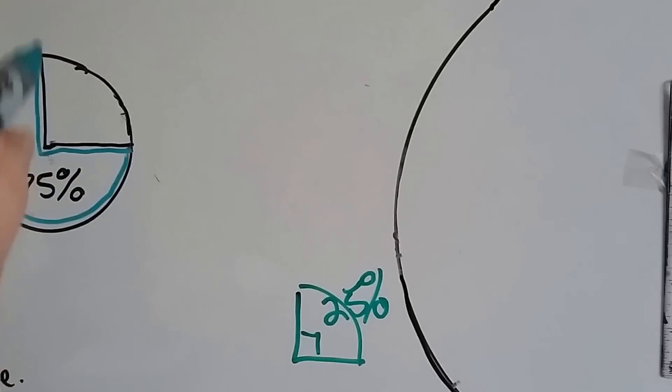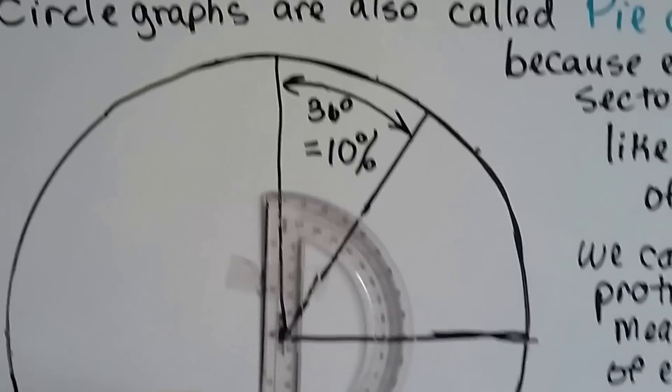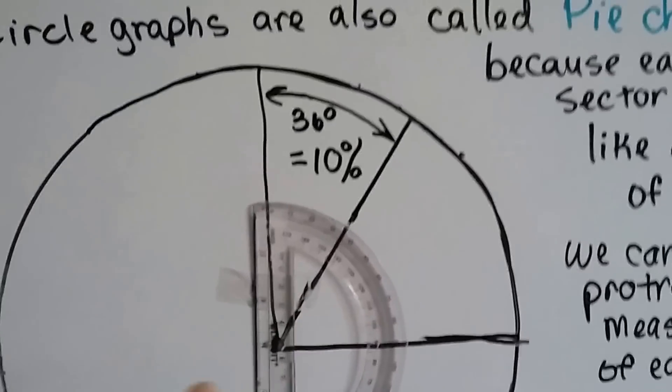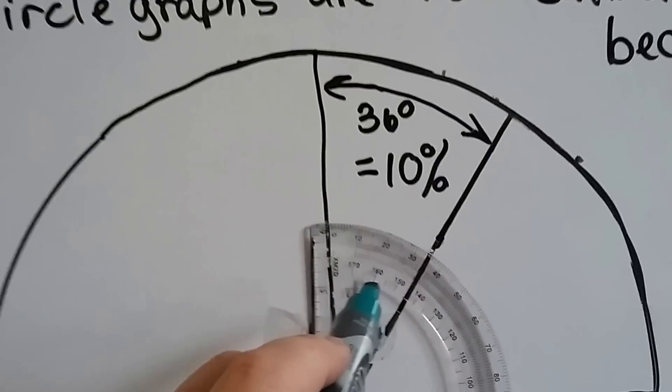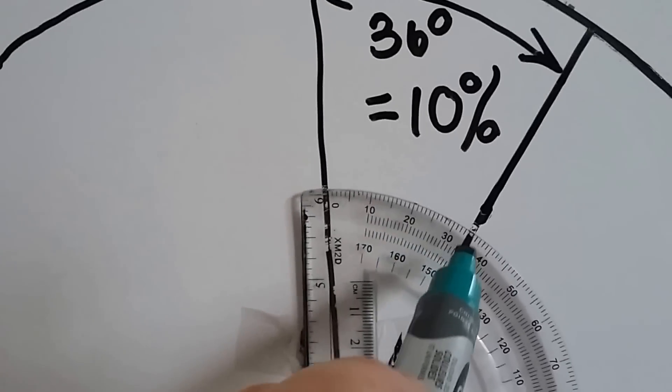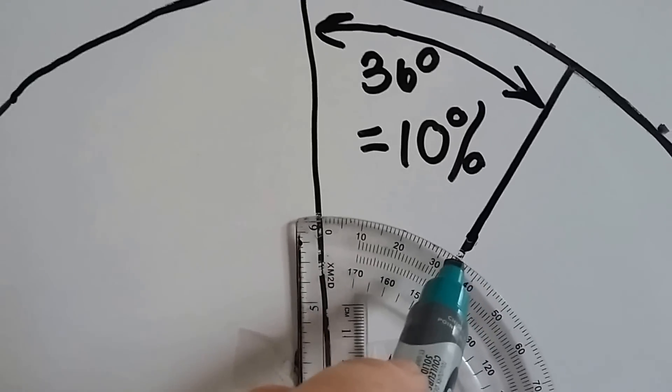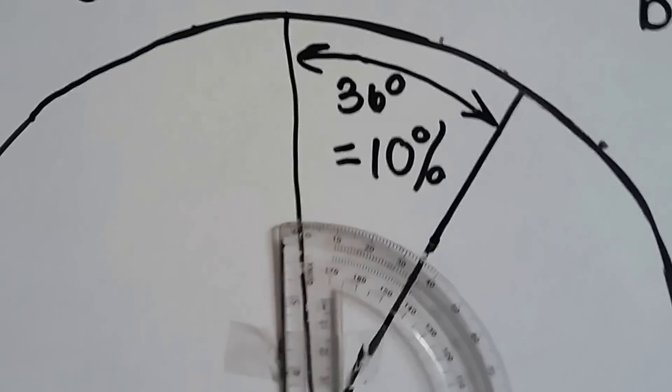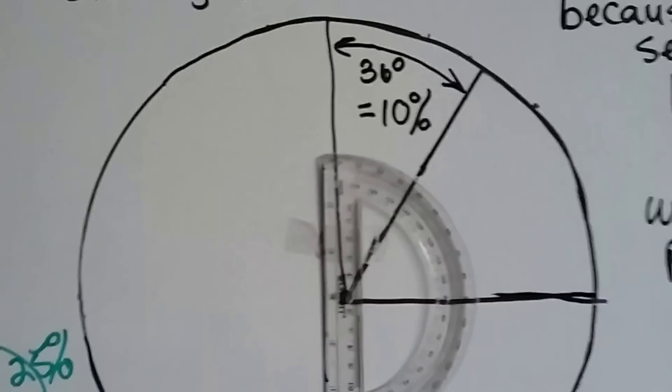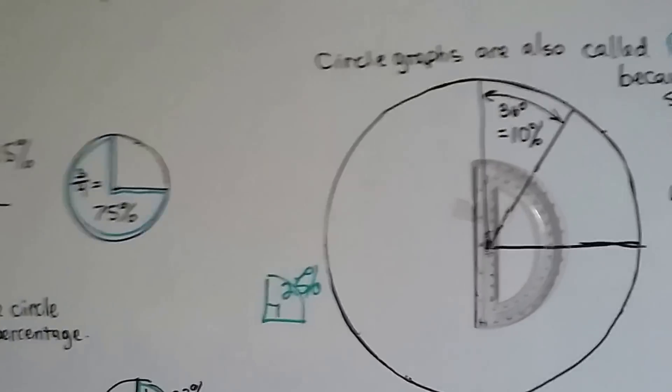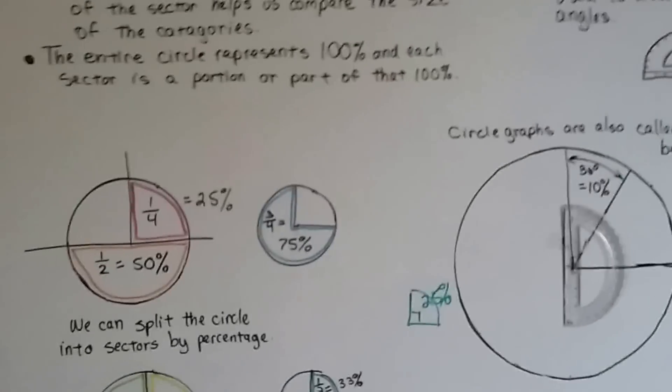The protractor will help us draw it. To get each 10%, all we have to do is get 36 degrees between the zero mark here and here. Then we know we've got 10% of our circle. You can make your own circle graph, your own pie chart, using a protractor.